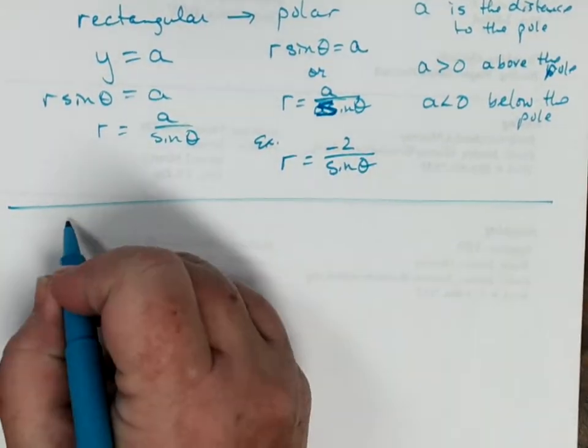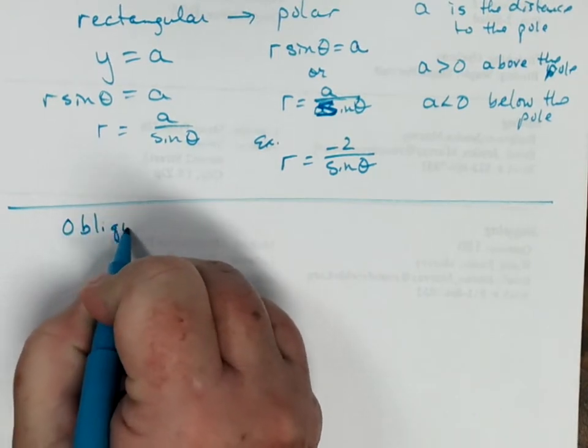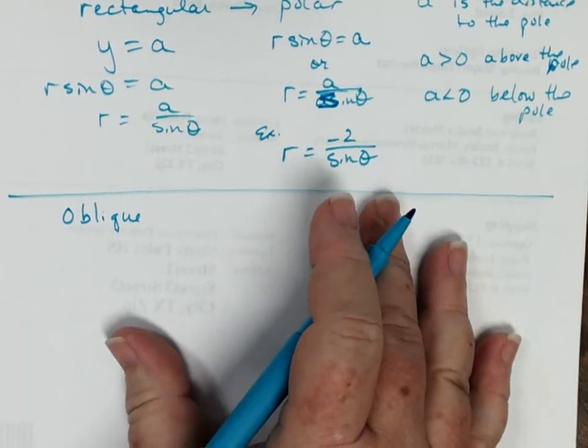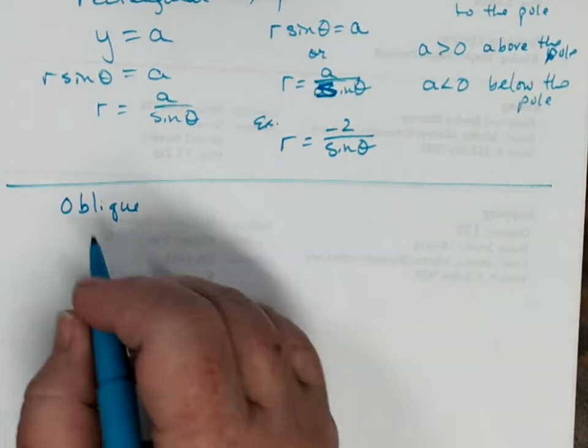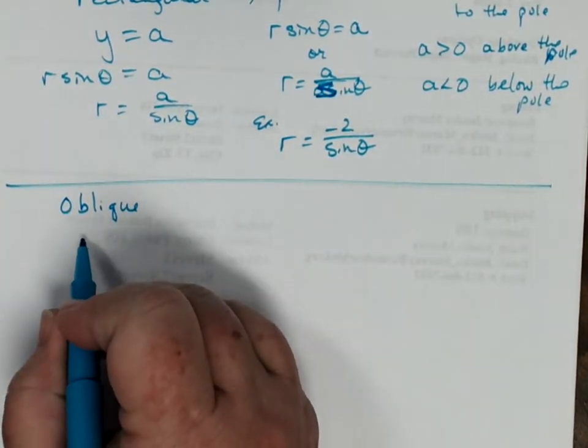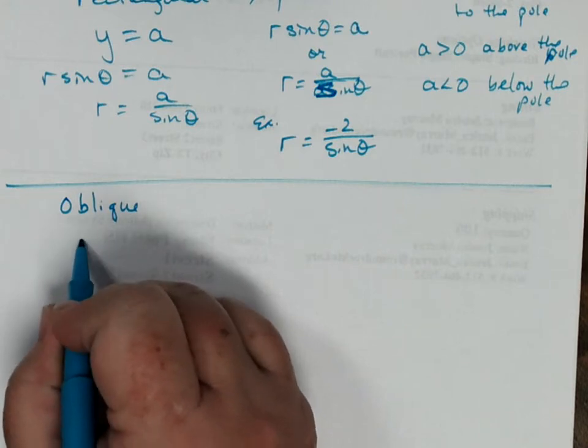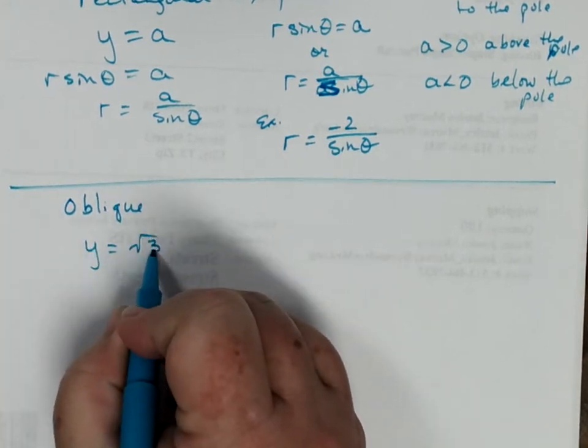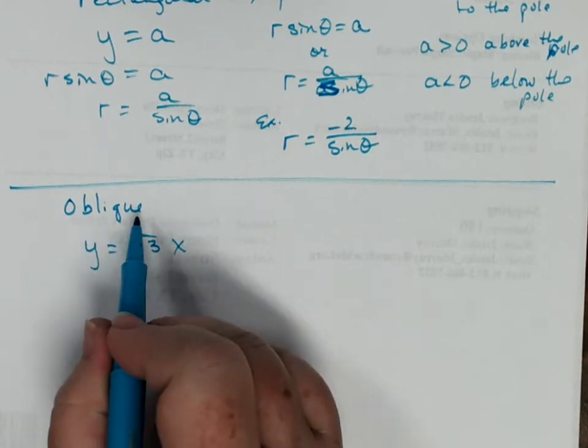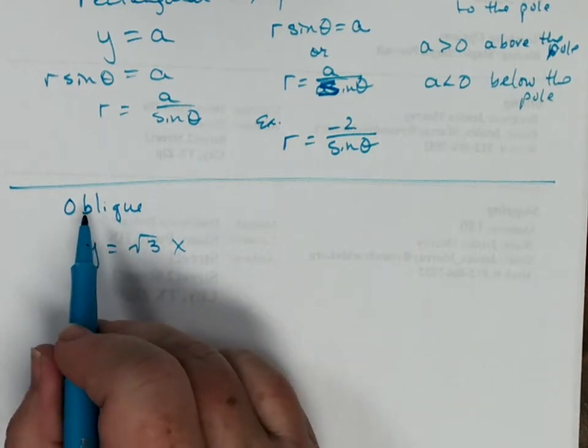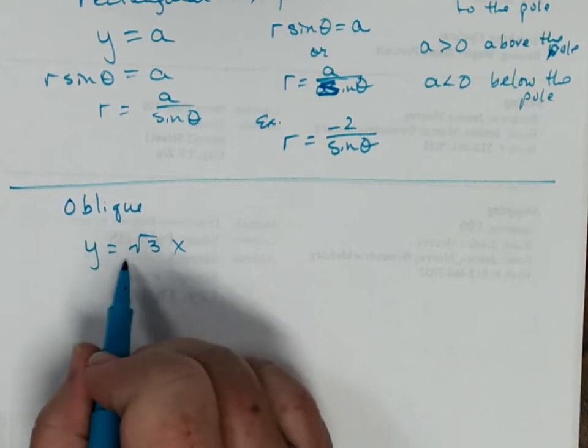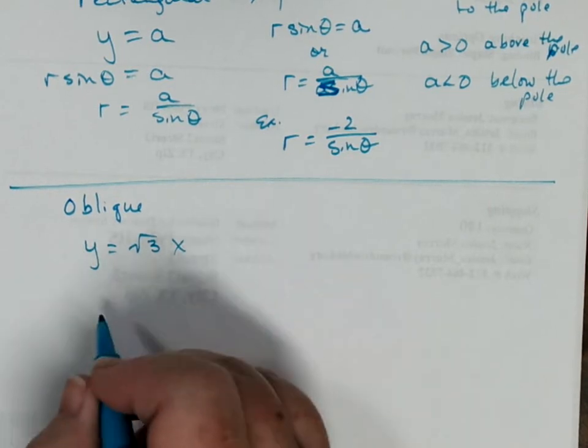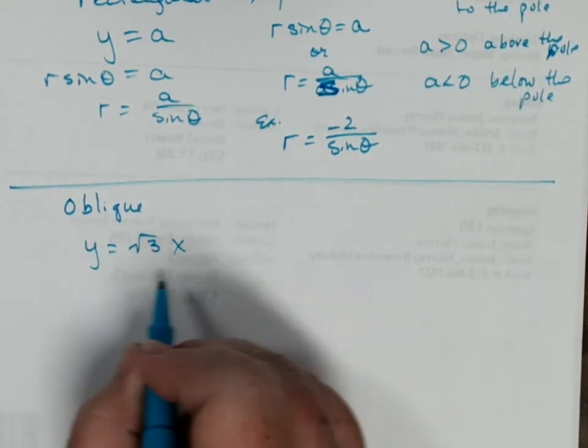Now oblique lines are a little more difficult to explain, and we cannot actually graph them on a graphing calculator. If we are looking at an oblique line, for example, y equals the square root of 3x. And you know that an oblique line is a line that doesn't have a slope of 0 or undefined, but has another slope. It's just a normal y equals mx plus b format.